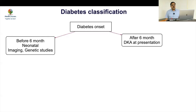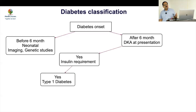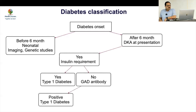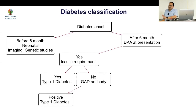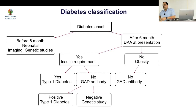If onset is after six months of age with DKA presentation and the child is needing insulin, this is type 1 — don't do any further workup. If insulin is not required — it may be honeymoon phase for one to two years — then do a GAD antibody. If the antibody is positive, this is type 1; if negative, go for MODY testing.